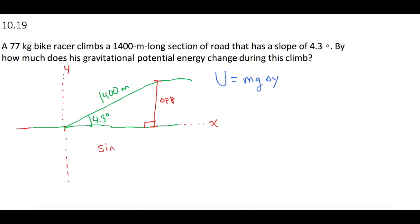Sine of theta equals opposite over hypotenuse. So, sine of 4.3.